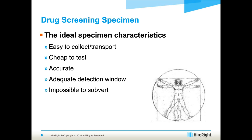Ideally, it has to be inexpensive to test. It has to be accurate — we don't want to take punitive action against someone who doesn't deserve it. Accuracy is very important in this arena. You also have to look for adequate detection windows. If a specimen only detects drug use for a very brief period of time and you're never testing within that detection window, that specimen really isn't all that useful. And then it has to be impossible to subvert — there's no way to game or study for the test.